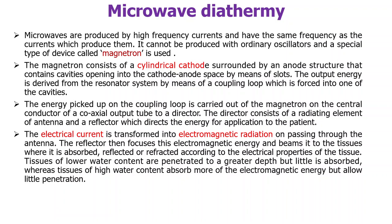The microwaves cannot be produced by ordinary oscillators. Here the microwaves are produced by the device called magnetron. Magnetron consists of a cylindrical cathode that is surrounded by an anode structure and that contains cavities. There we have cathode-anode slots. The output energy is derived from the resonator, and we pick up this output energy by using a coupling loop.